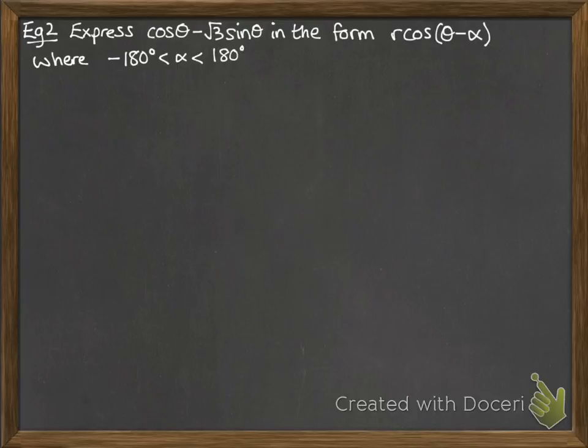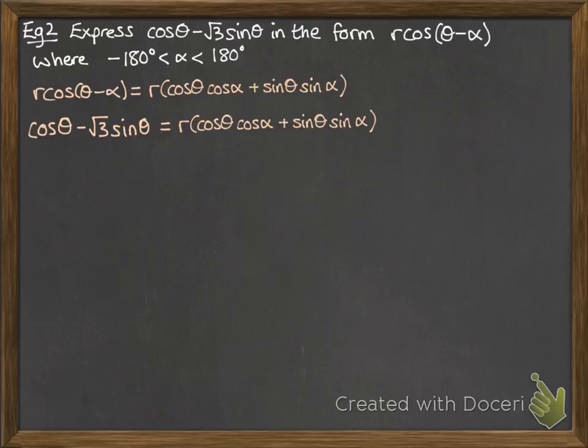So this example is one that you're more likely to get. The ones we've looked at before had the angles being acute each time. This one actually gives you a range that you need to consider. So just like solving trig equations, you'd look for all the solutions within a range. We're going to do the same with this one. So first of all, we want to express it in this form of cos. So there's the expansion. So we are making cos theta minus root 3 sine theta equal to that expansion.